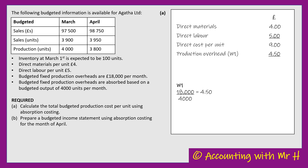Adding that on to the direct cost of £9 gives us the answer to Part A: the total budgeted production cost per unit is £13.50.